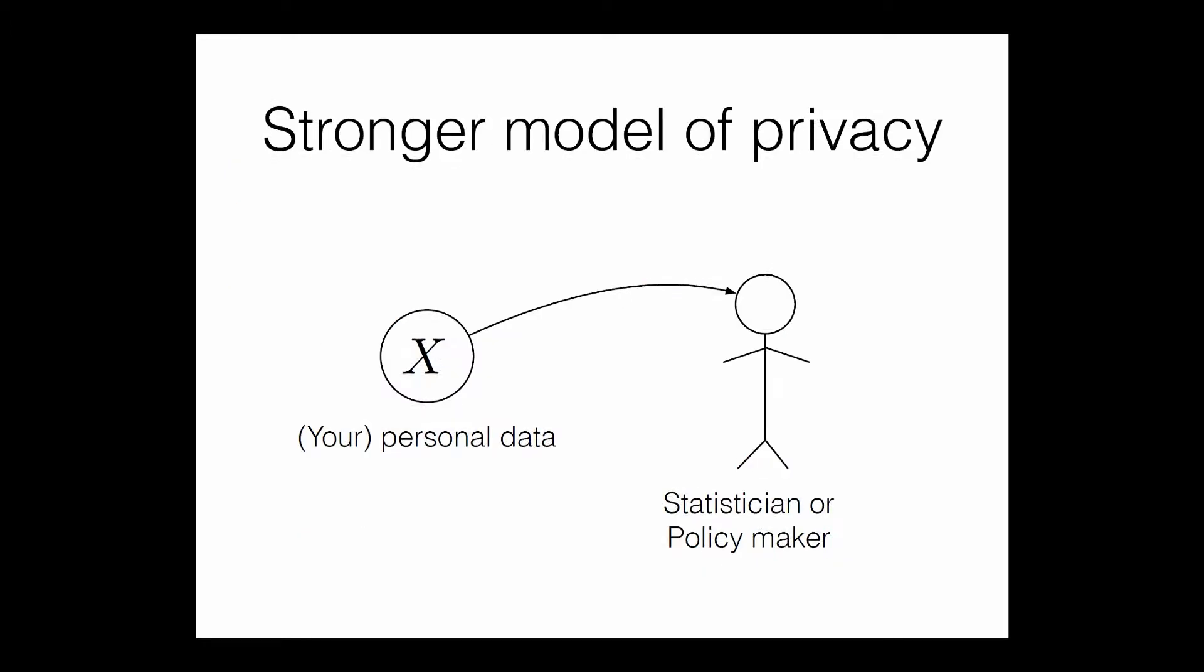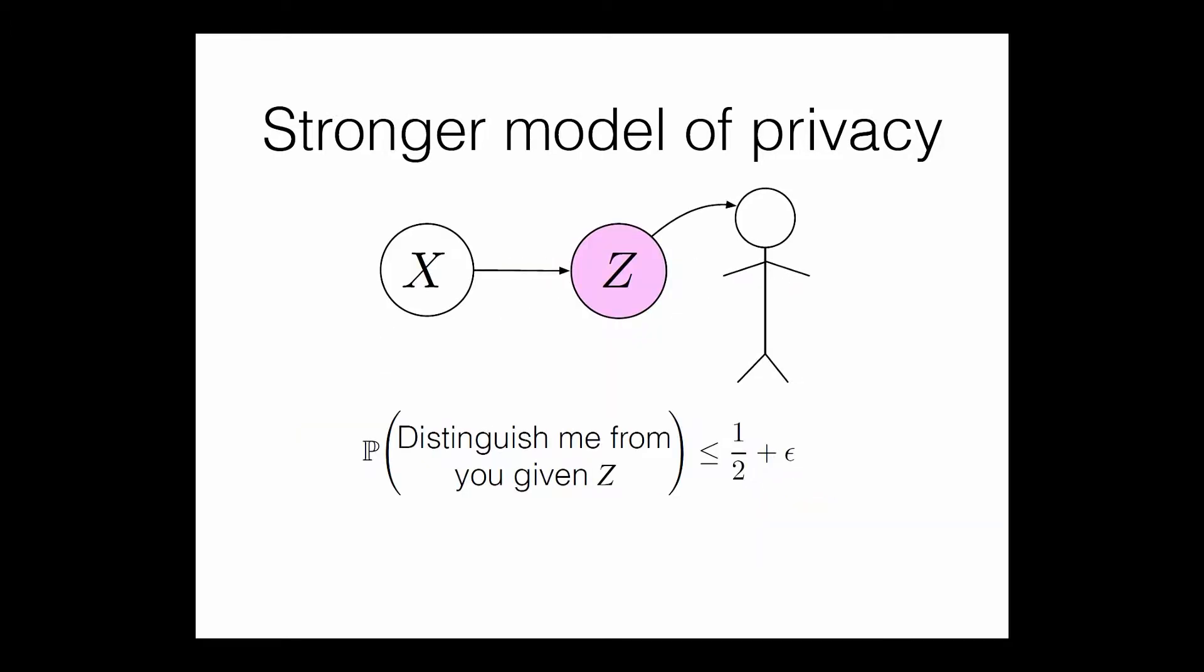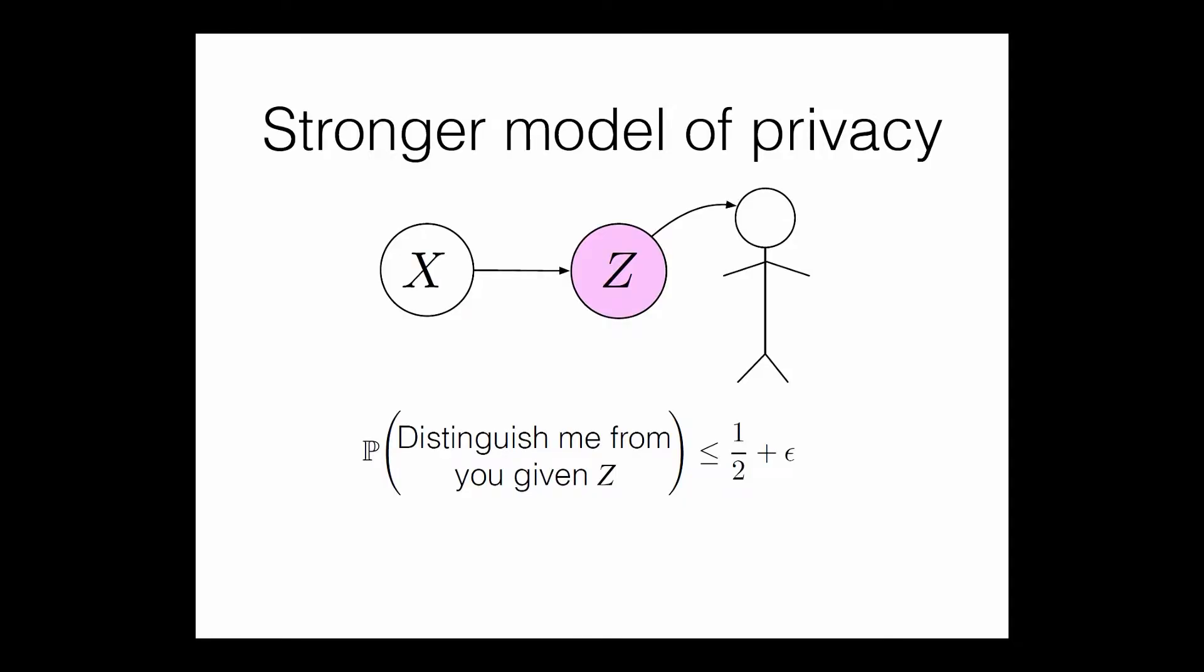So a different way to look at this is, there's your personal data. There's me, the statistician or policymaker or person in Silicon Valley creeping on your data. And before it gets to me, it gets obfuscated, and we're going to guarantee that the probability that I can distinguish, say, Kathy from Rudy, given this sort of private z, whatever it is, is going to be less than, say, like a half plus some small epsilon. So nearly 50-50. Not much better than 50-50 guess, whether it's Kathy's data or Rudy's data. So that's the game. That's how we set up the game of privacy. Just make sure we have not much better than 50-50 chance, even if I get to observe whatever the heck you spit out from the z.